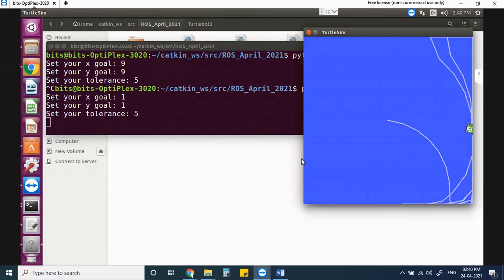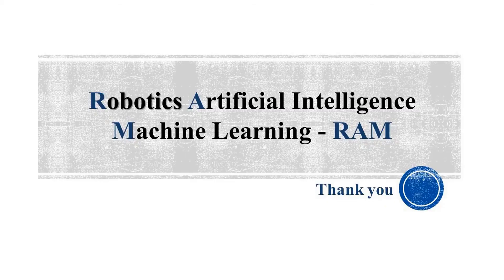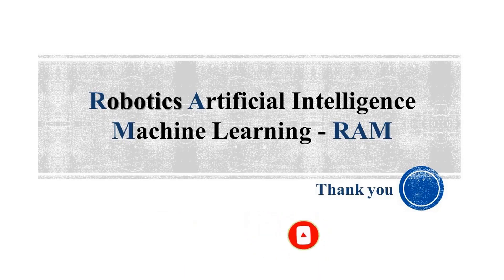Even with a tolerance of 5 the robot does not stop due to the high constant value. That brings us to the end — thanks for watching, please subscribe to my channel for future updates. This is Srinivas signing off.